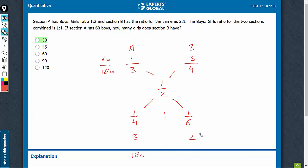If Section A has 180 students, Section B has 180 times 2 by 3, which is 120 students.